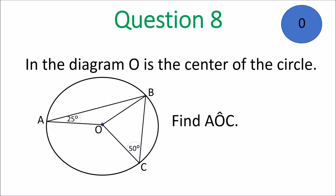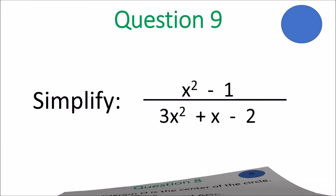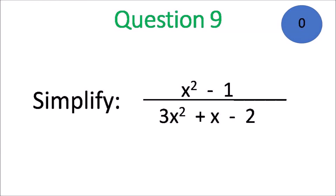And we move on to question 9. Simplify: x squared minus 1, all over 3x squared plus x minus 2. Simplify it.